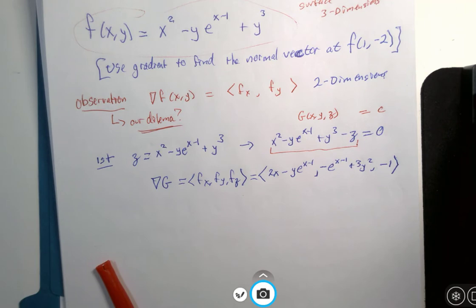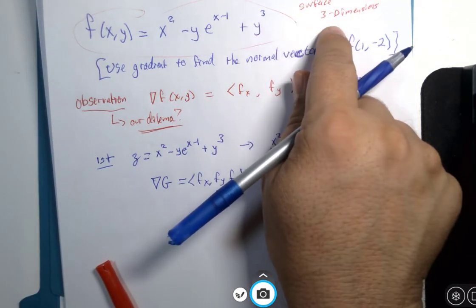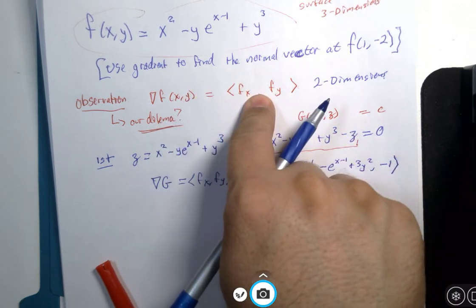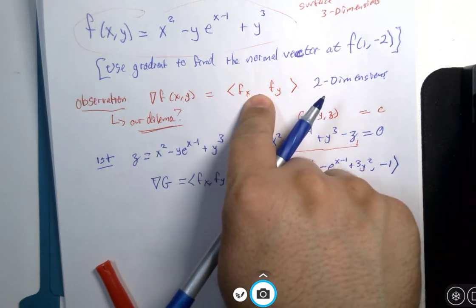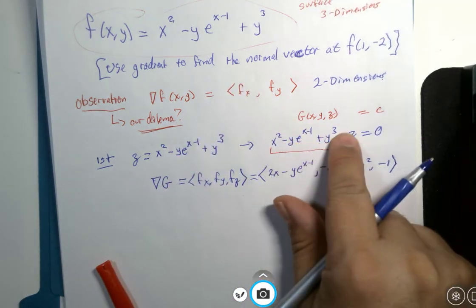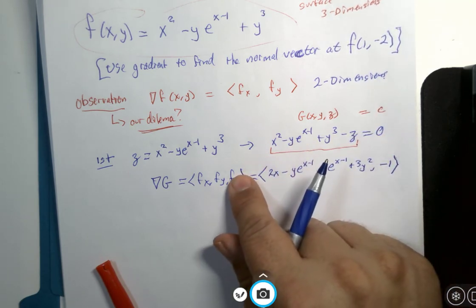Let me summarize so far. I had a function of x and y, which is the surface in three dimensions, but the gradient only gives me two of the three variables I need, or two of the three components I need. So we rewrite the problem so x, y, and z are together, equal to 0, and now I can do a three variable gradient.